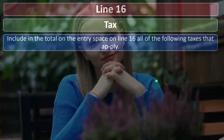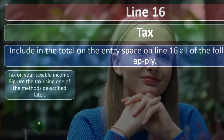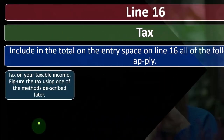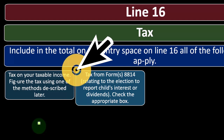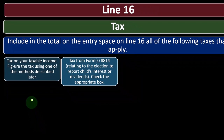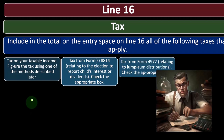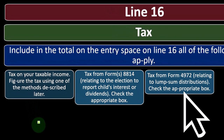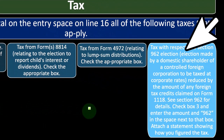For line 16, include in the total all the following taxes that apply: tax on your taxable income, figured using one of the methods described later; tax from Form 8814 relating to the election to report a child's interest or dividends — check the appropriate box; and tax from Form 4972 relating to lump-sum distributions — check the appropriate box.